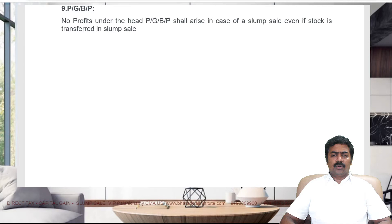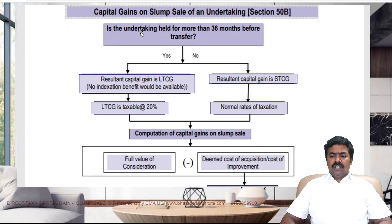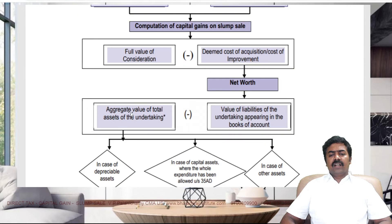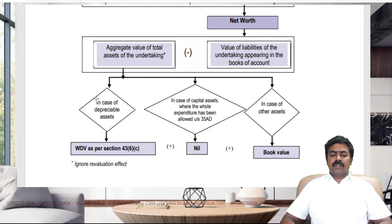This is a flowchart of slump sale. Is the undertaking owned for more than 36 months? If yes, it is long-term capital gain taxable at 20%. If no, it is short-term capital gain taxable at normal income tax slab rate. How to calculate capital gain? Take the consideration minus expense on sale, minus net worth. Net worth means assets minus liabilities. For depreciable assets: WDV. For assets where full depreciation is claimed under section 35AD: value is zero. For other assets: book value. Please ignore revaluation effect.